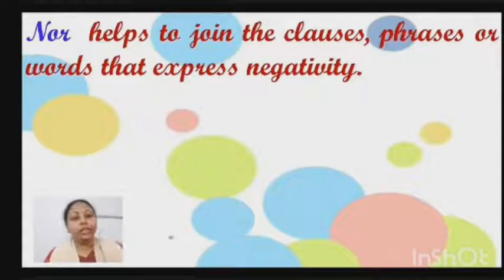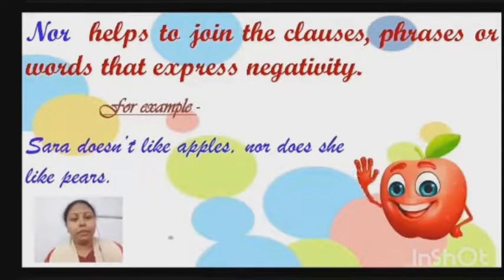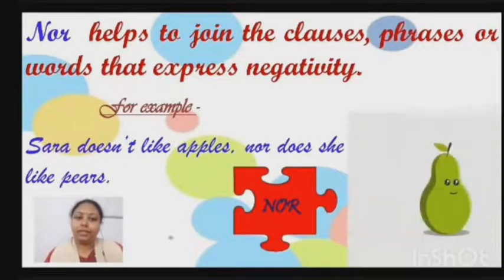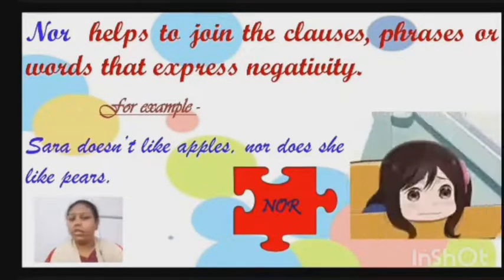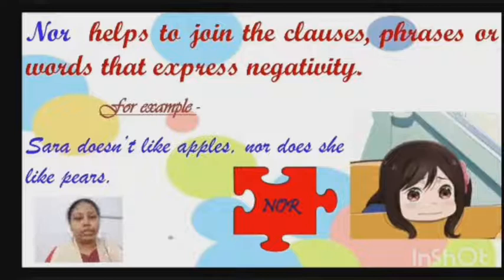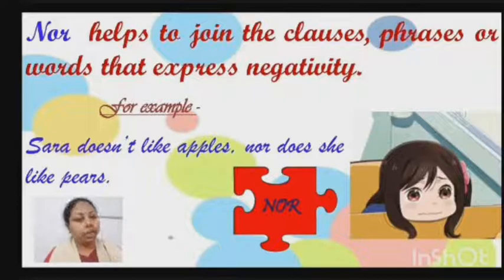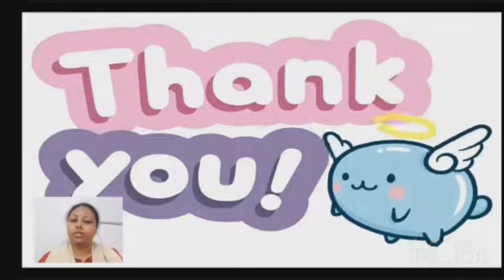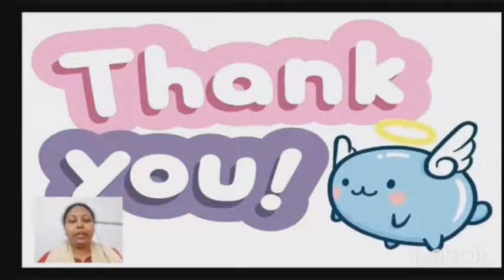Now let us see this through an example: 'Sarah doesn't like apples, nor does she like pears.' Sarah is very sad — she does not like apples, nor does she like pears. So both sentences are negative in nature, because of which we can use 'nor' as the joining word here. Thanks, children, for joining me. In our next class, we will learn about a few more conjunctions. Till then, bye-bye.